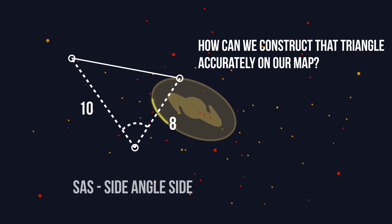So there we have drawn a side angle side triangle just using a ruler and a protractor.